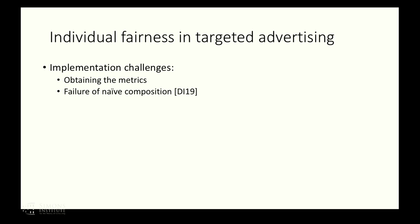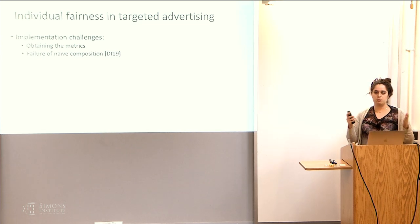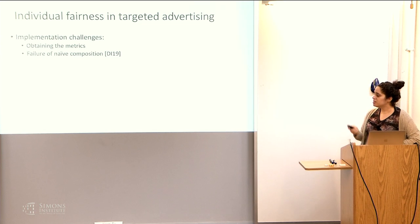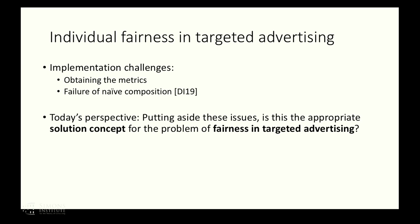There are a couple of challenges in how you would actually implement this. The main challenge is obviously where do you get these metrics. A second challenge, covered in the Dwork-Ilvento paper, is that naive composition fails — it's not enough for each advertiser separately to behave in a way that is individually fair with respect to their ad, because this won't necessarily compose into a fair solution. These are good and important challenges, but the perspective I want to take is to step back and ask, putting aside these issues: is this actually the solution concept we're after? The spoiler is that the answer is not quite.